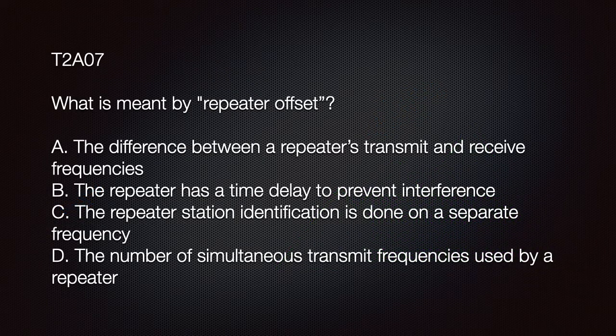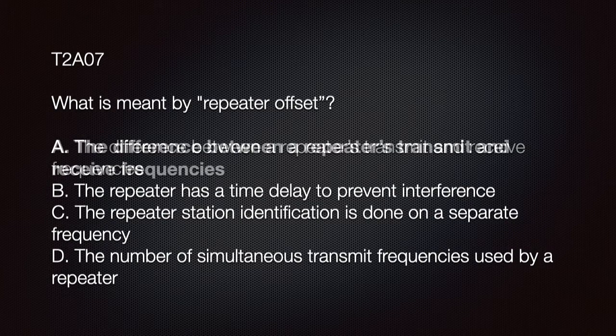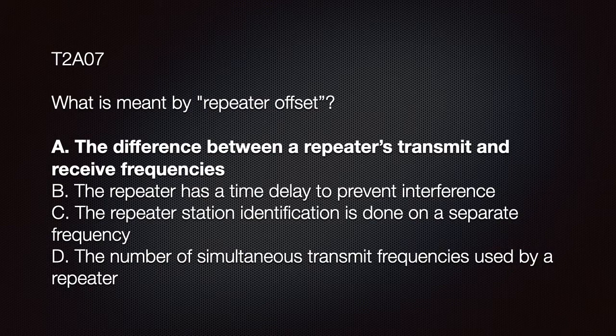The exam question is: What is meant by repeater offset? A: The difference between a repeater's transmit and receive frequencies; B: The repeater has a time delay to prevent interference; C: The repeater station identification is done on a separate frequency; or D: The number of simultaneous transmit frequencies used by a repeater station. The correct answer is A, the difference between a repeater's transmit and receive frequencies.